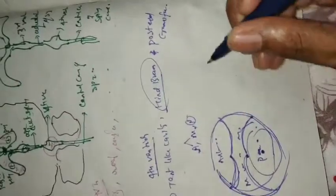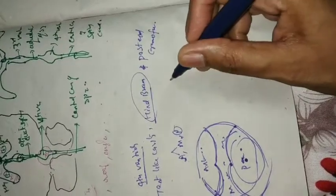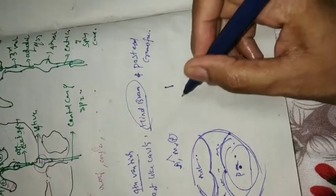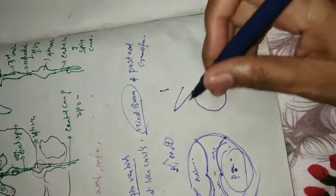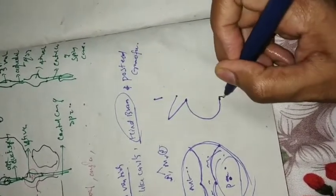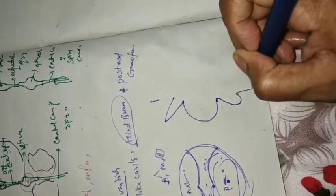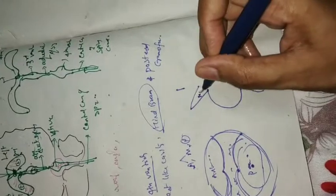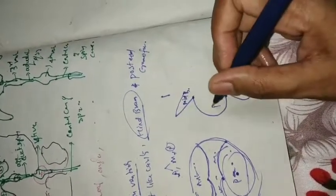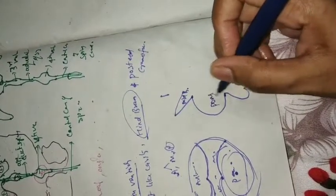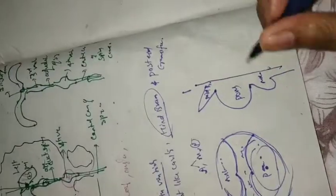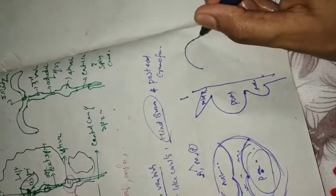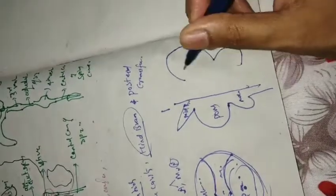If you see from a side view, this is your midbrain, this is your pons, and this is your medulla. And here you will have your cerebellum.